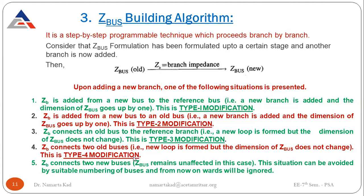There is also a fifth case where ZB connects two new buses — Z bus remains unaffected. This situation can be avoided by suitable numbering of buses, so we are not considering this case as it gives rise to a separate system not connected to the old system. We will only deal with the four modifications: type 1, type 2, type 3, and type 4.